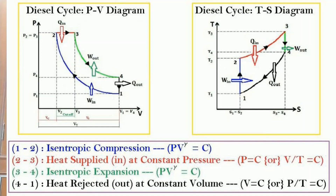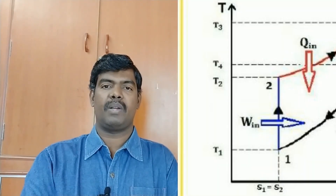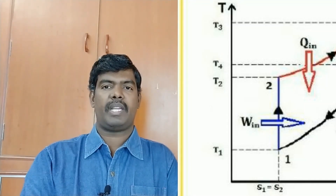In the PV diagram, volume reduces from V1 to V2, and pressure rises from P1 to P2. The temperature increases from T1 to T2, as clearly shown in the TS diagram. Since the process is isentropic, entropy is constant and there is no heat transfer — in an ideal cycle, S1 equals S2 as shown in the TS diagram.